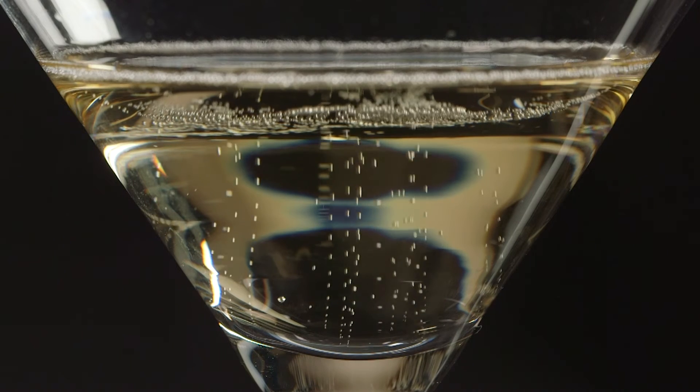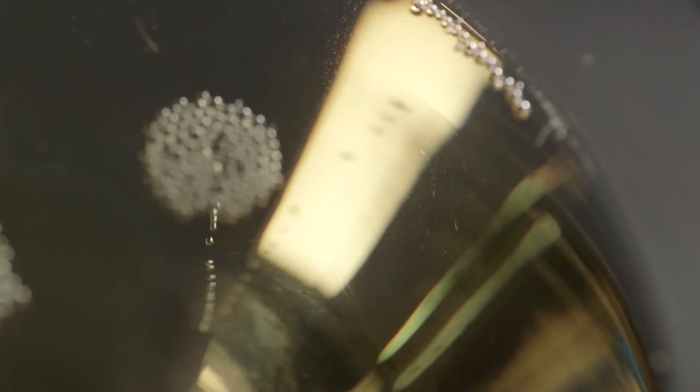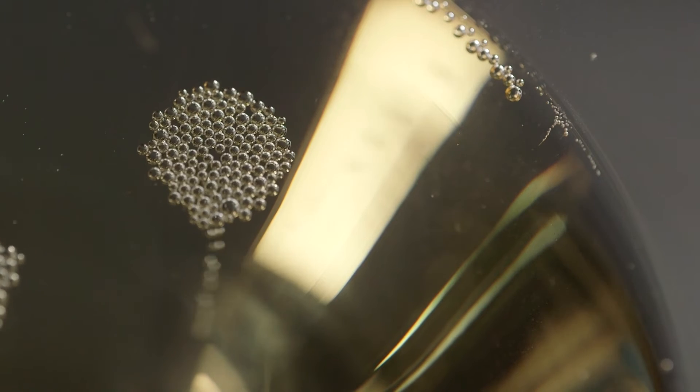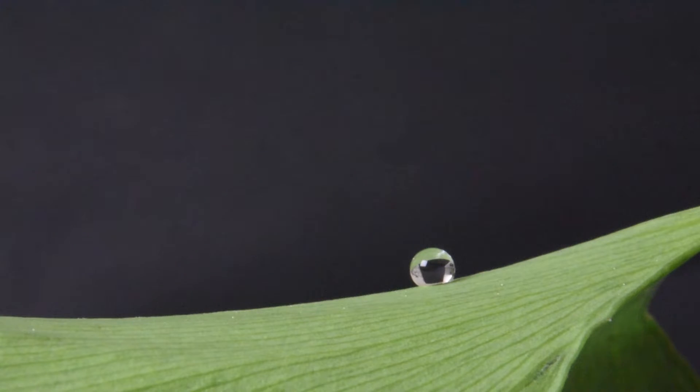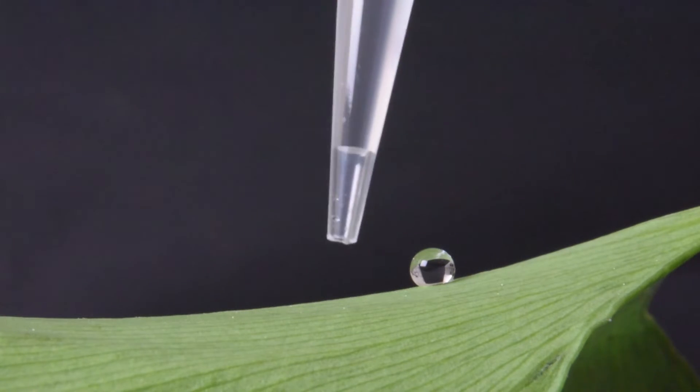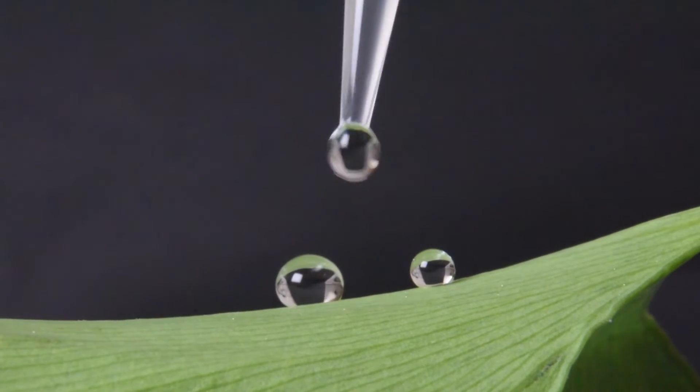There are other situations where we observe spherical interfaces. In a glass filled with champagne, the small bubbles of carbon dioxide nucleated at the glass surface are spherical, and they remain spherical as they rise in the liquid. On lotus leaves, where water contact is minimized, raindrops looked like pearls with a nearly spherical shape.